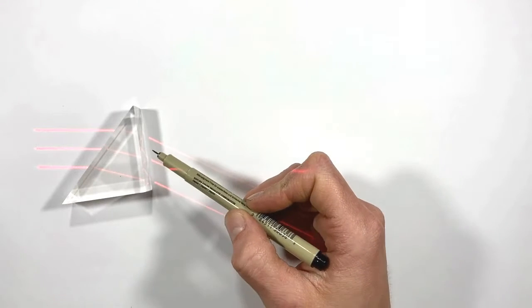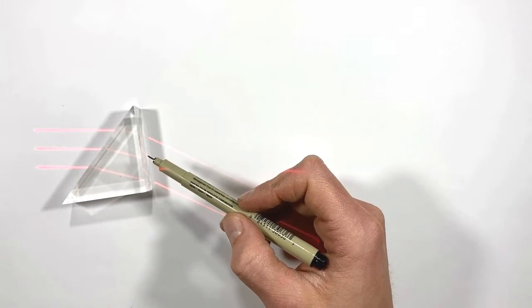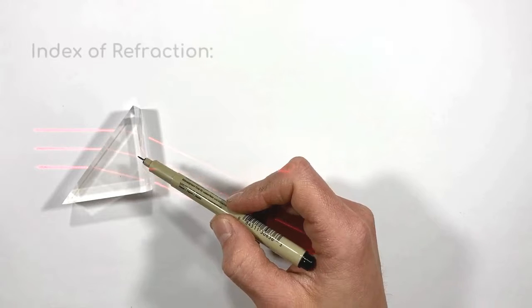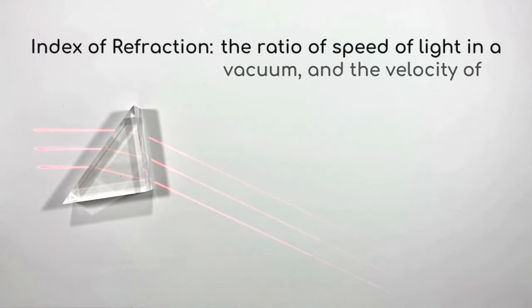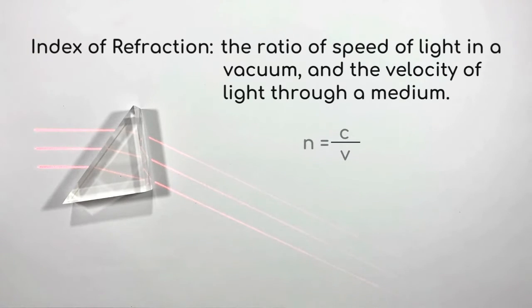And the amount light appears to slow down in a particular medium is called the index of refraction. And index of refraction is defined as the ratio of speed of light in a vacuum and the velocity of light in a medium, and is given by the equation n equals c over v.